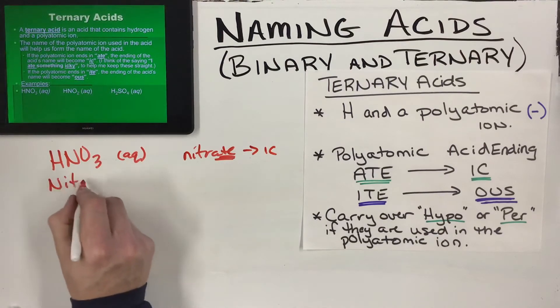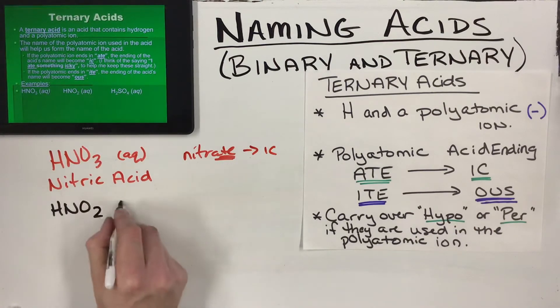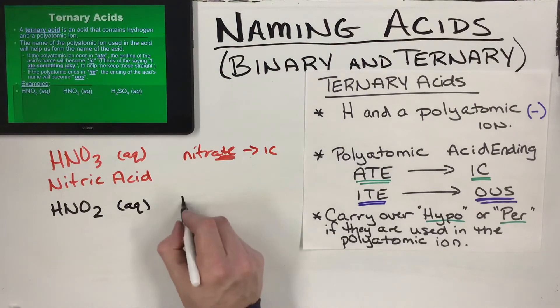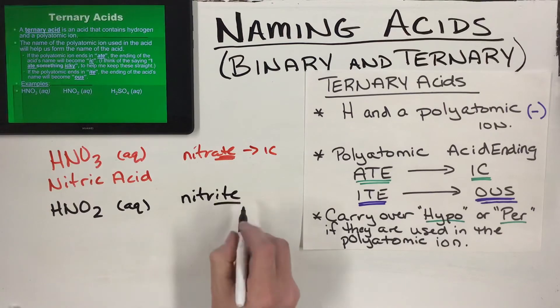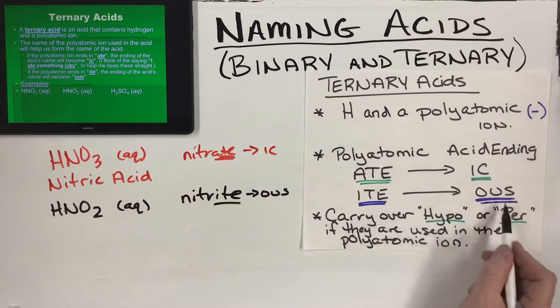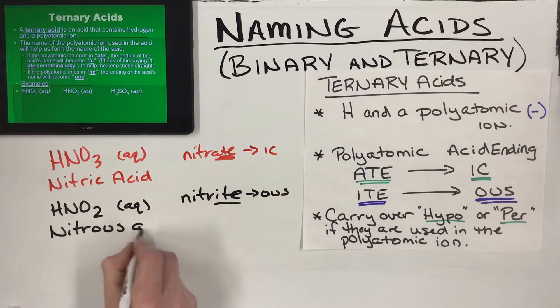Our next one: HNO2, it too is aqueous. One, two, three elements - this isn't binary, not using hydro in it at all. NO2 is nitrite, that -ite is going to become -ous, so it's going to be nitrous acid.